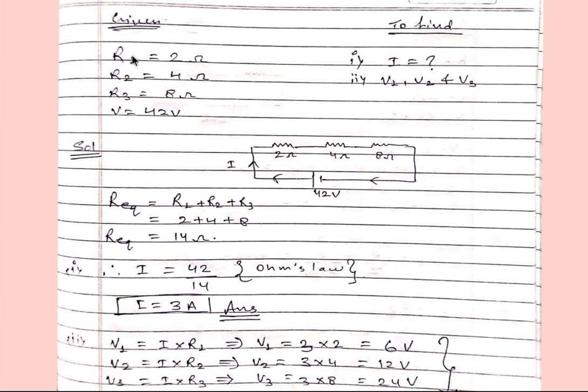First of all we will write given and what we have to find. So given is R1 equals 2 ohm, R2 equals 4 ohm, R3 equals 8 ohm, and voltage is 42 volt. We have to find the current and V1, V2, and V3. I have drawn a simple sketch in which three resistances are connected in series and connected across potential difference of 42 volt.